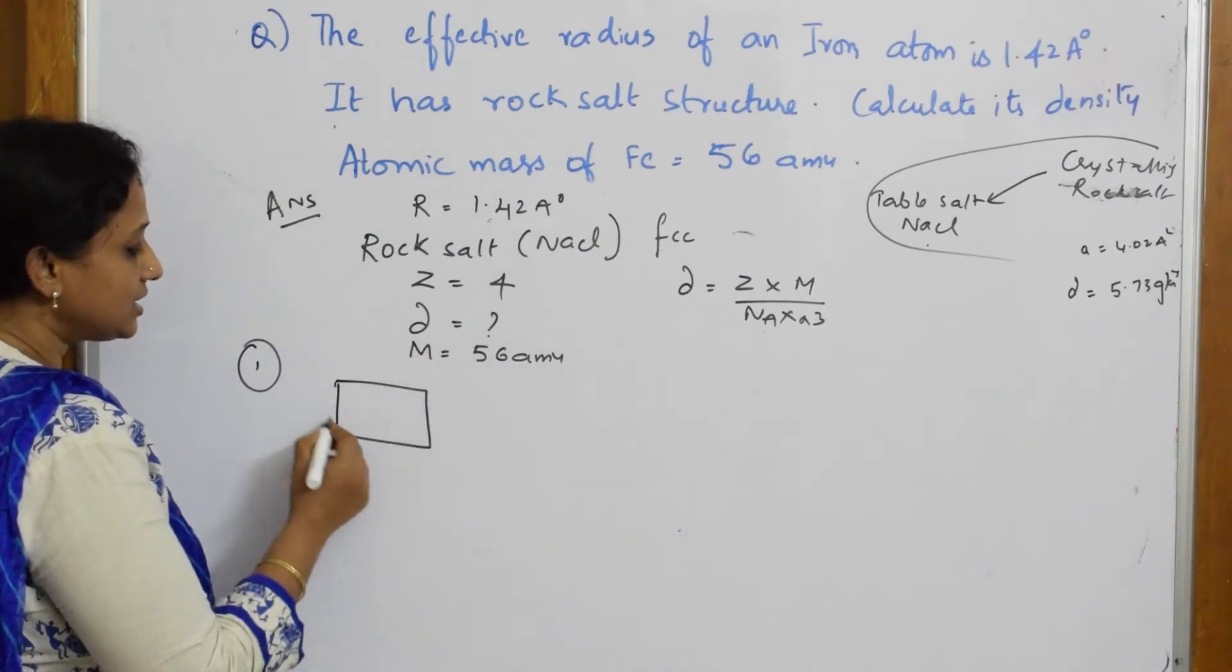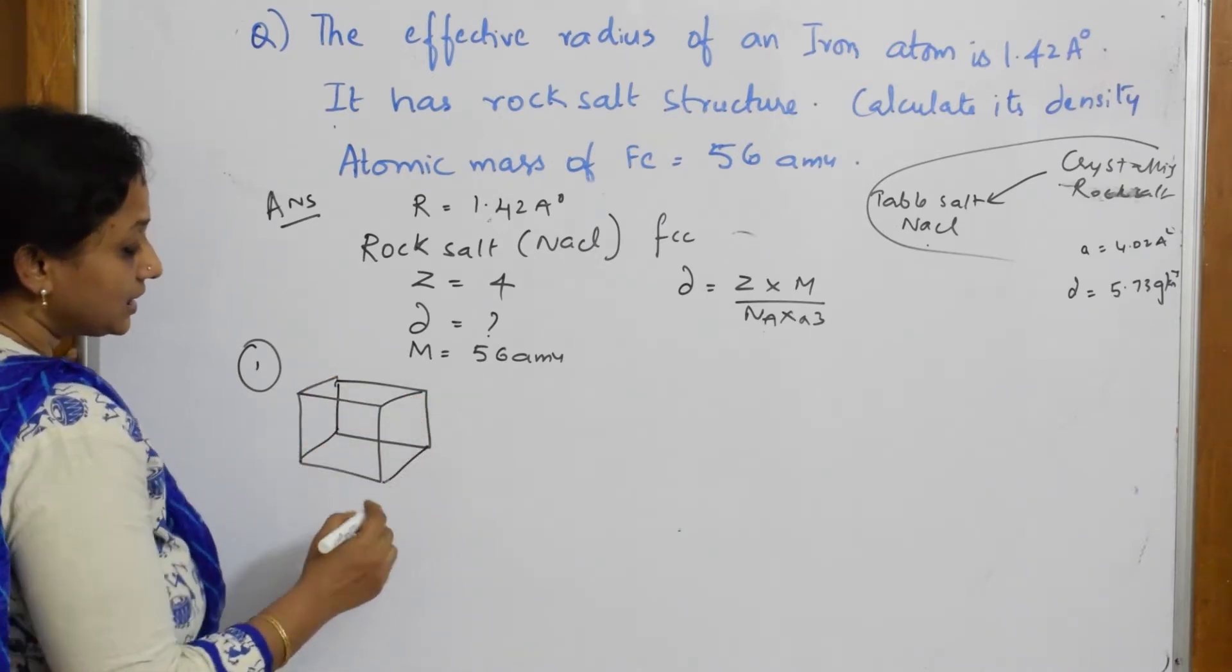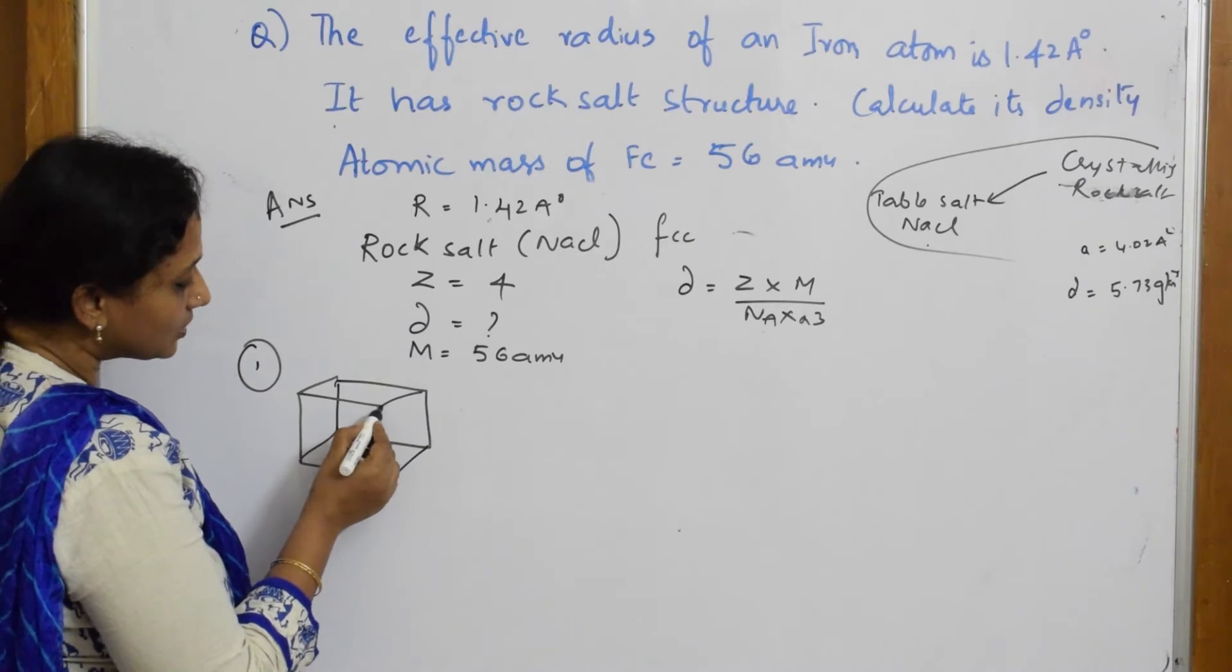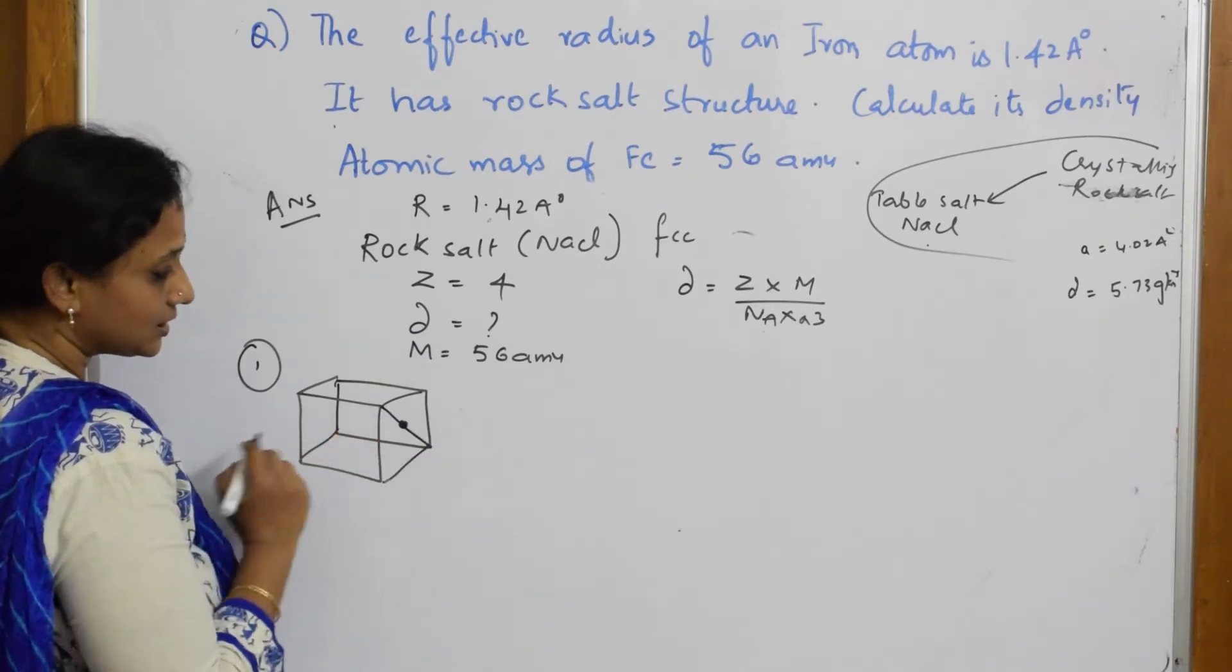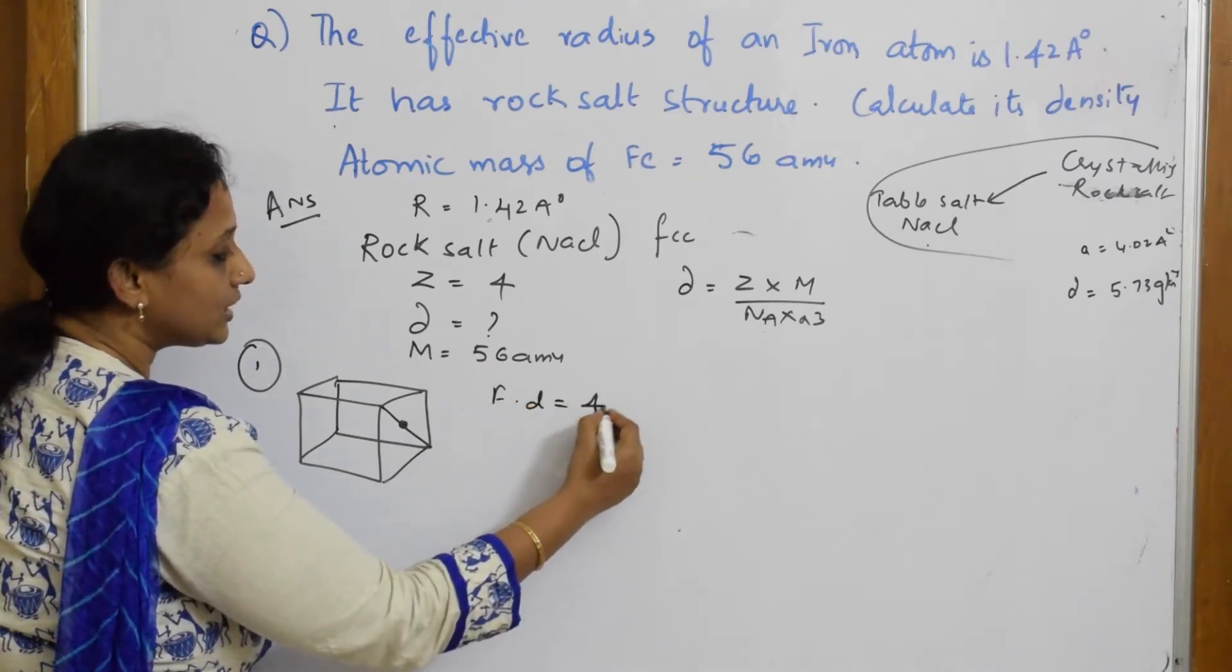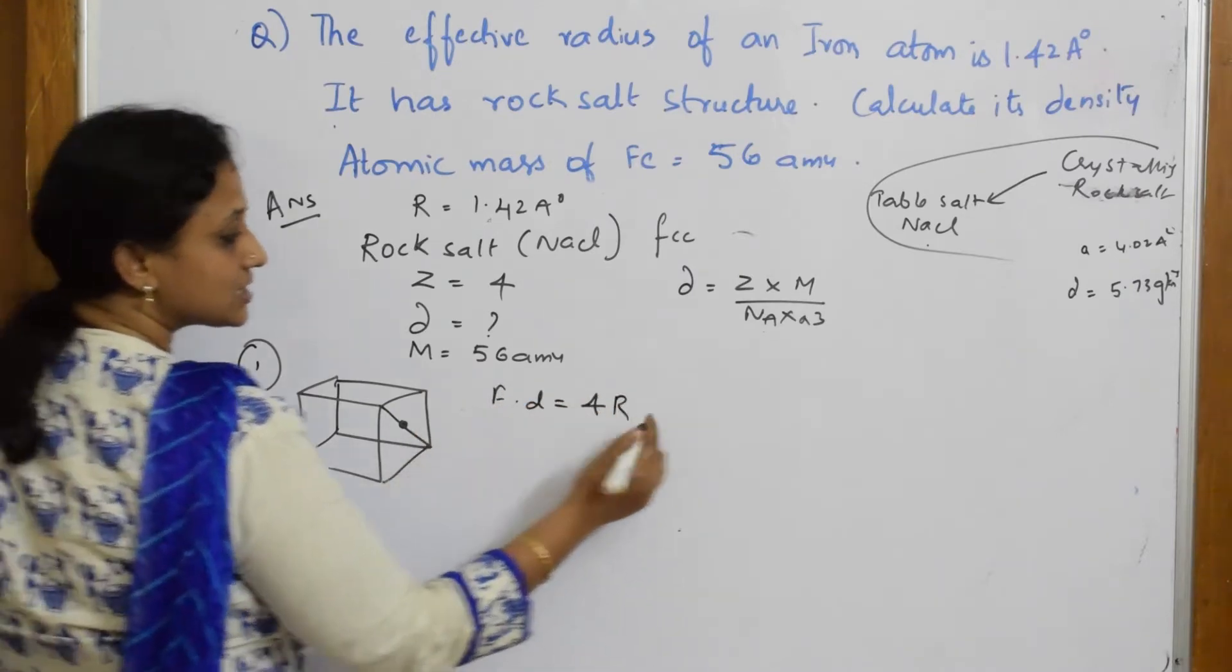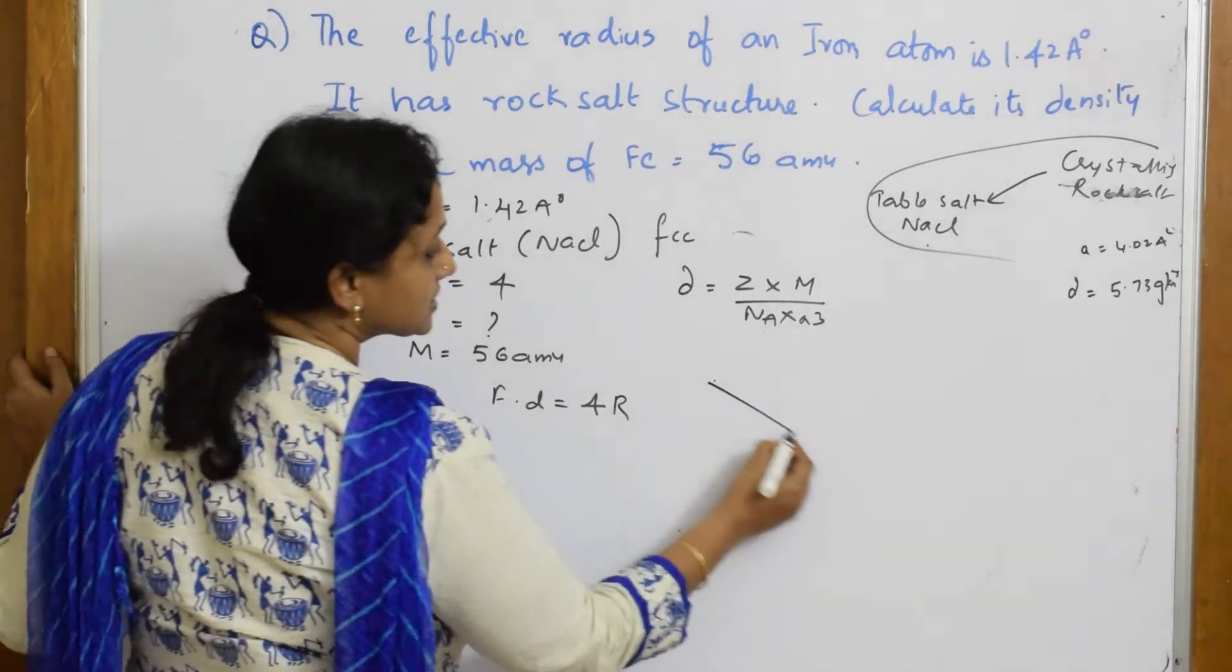It has rock salt structure, right? Rock salt means FCC. So in your FCC, we very well know when I draw this lattice like this. So this is your atom. You have atom on the faces also. This is your atom.